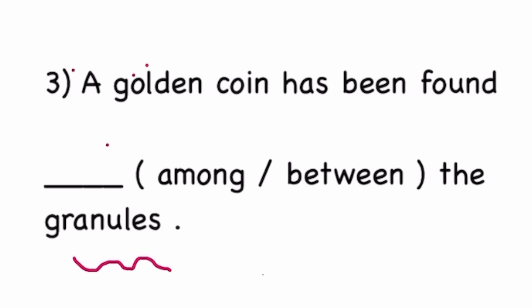The two options are among and between. Among refers to in the middle of many, whereas between refers to in the middle of two. Among means surrounded by many, between means surrounded by two. And granules means numerous, many in number. So the correct option is among. A golden coin has been found among the granules is the correct answer.